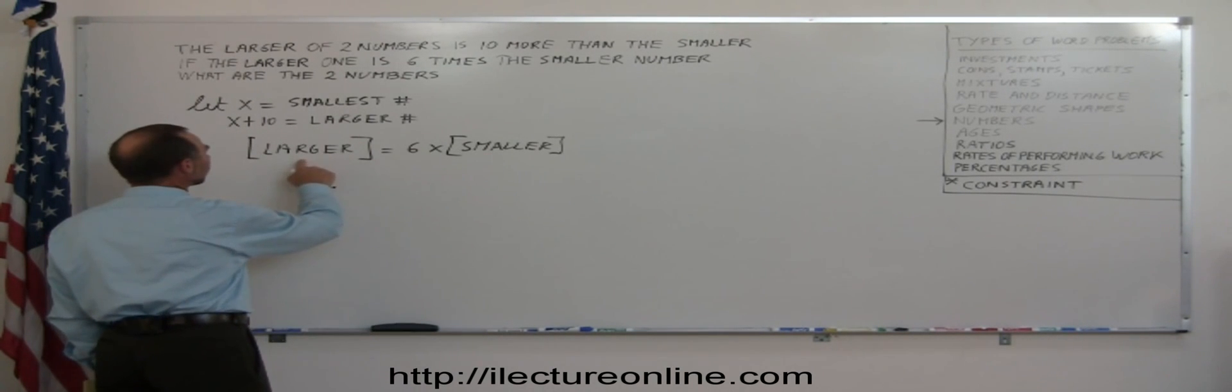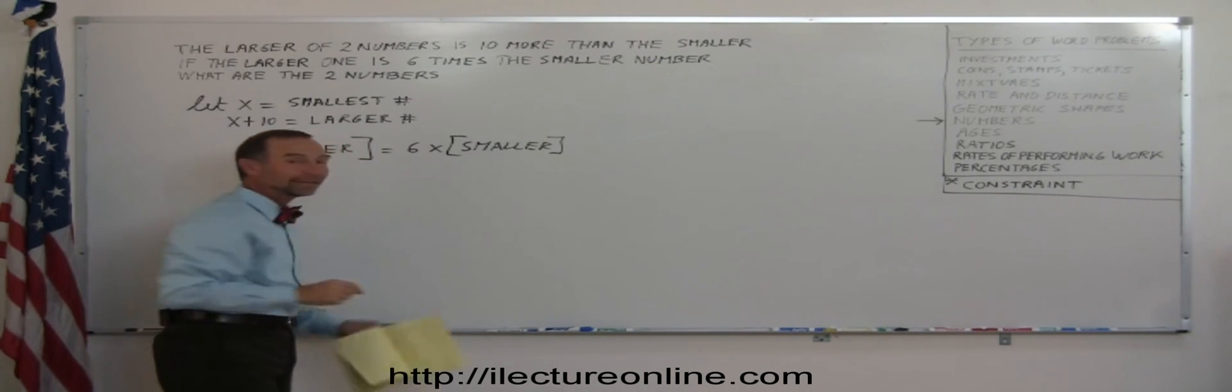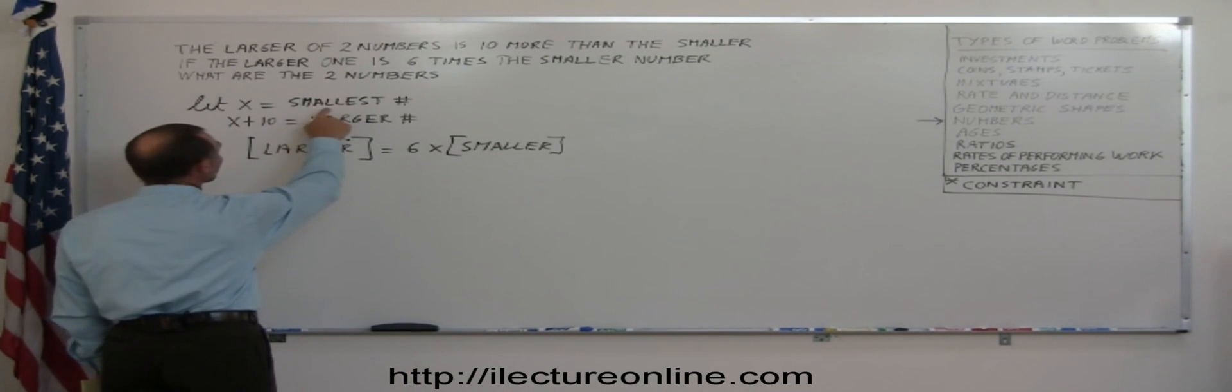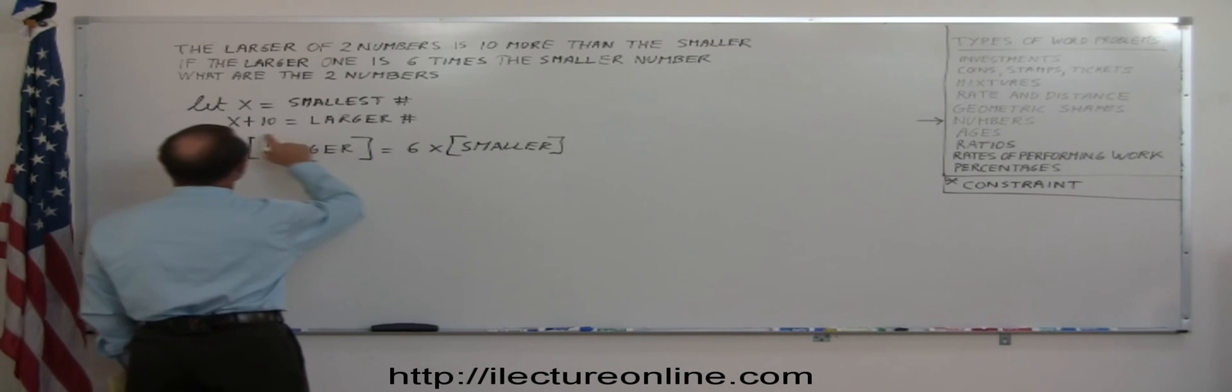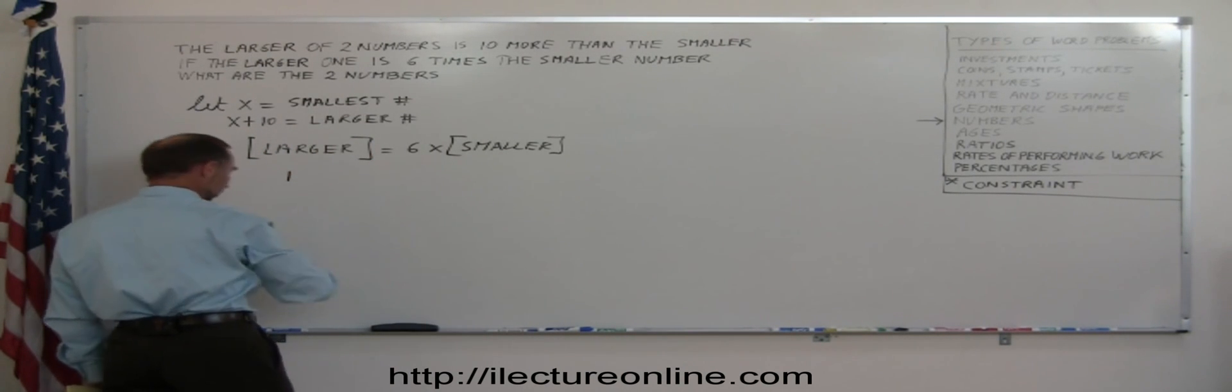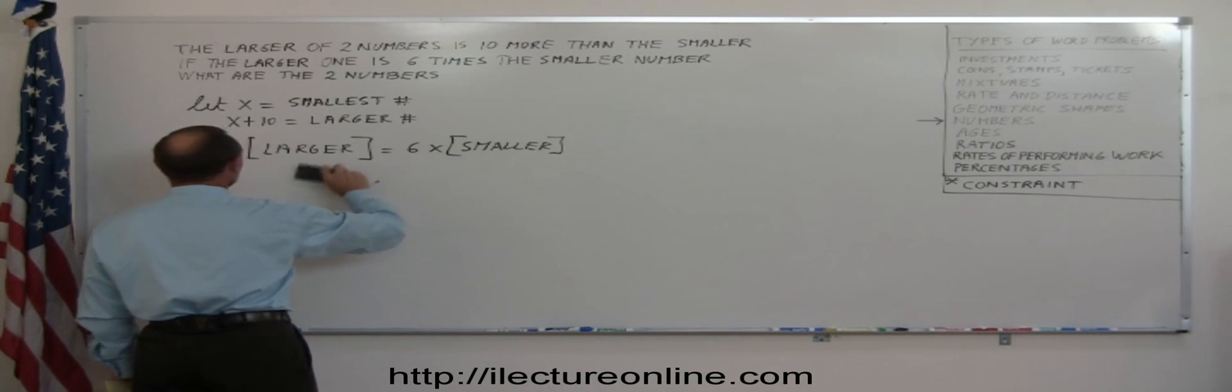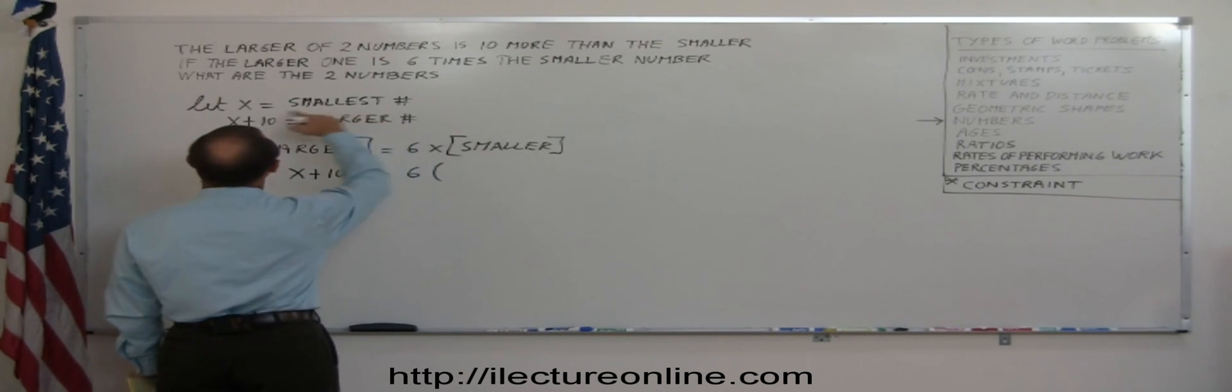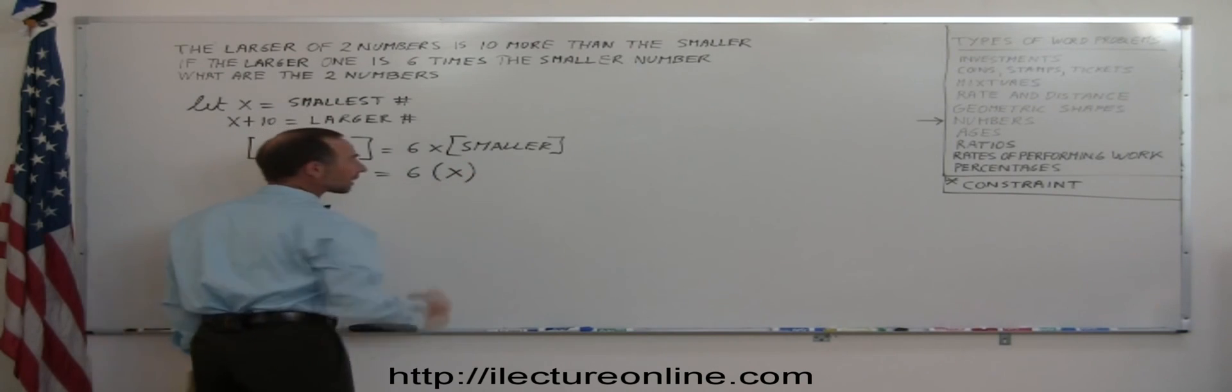Now we simply replace what the larger and smaller numbers are in terms of the way you defined it with the variable x. So if x is the smallest number, we're going to put x in there. If x plus ten is the larger number, we're going to put that in there. So x plus ten, which represents the larger number, is six times the smaller number, which is x.